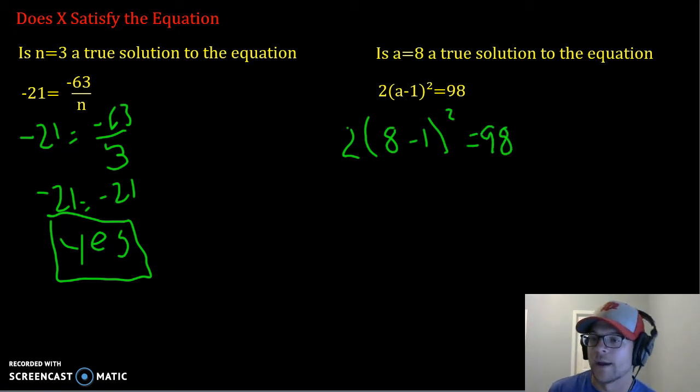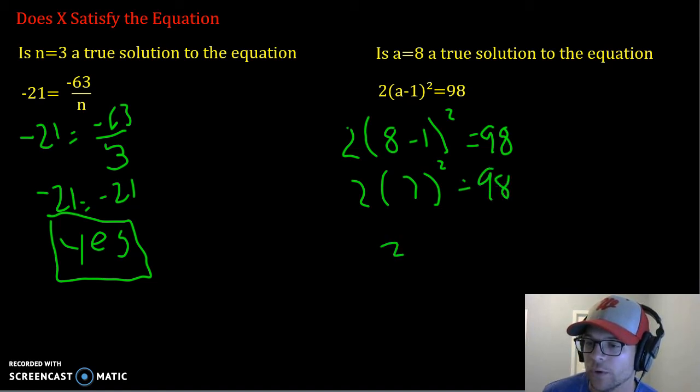And we're going to reduce this using our order of operations, since we have multiple steps. So parentheses comes first. Inside the parentheses, we have 8 minus 1, which becomes 7. Then we have exponents. 7 squared, or 7 times itself twice, is 49.